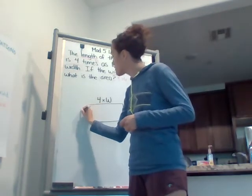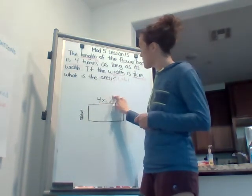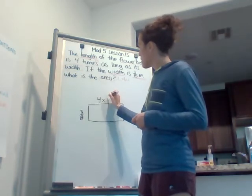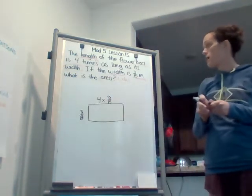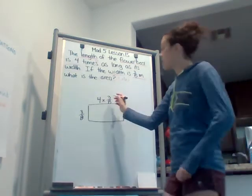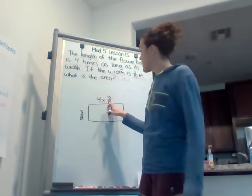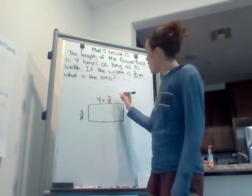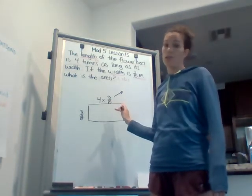is 3 eighths meter, or 3 eighths, 3 eighths meter, what is the area? So before we can solve for the area, we have to solve for the length first. And we found our formula is going to be four times 3 eighths. So if you didn't get this part, pause and go ahead and try to solve this on your own.